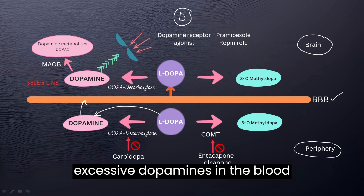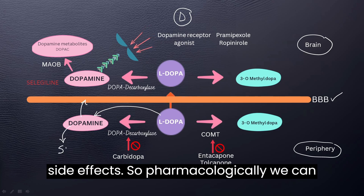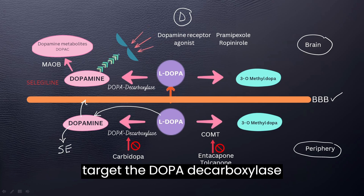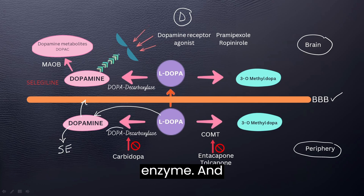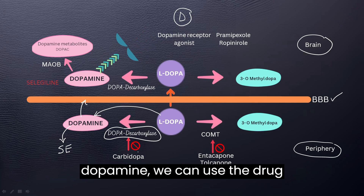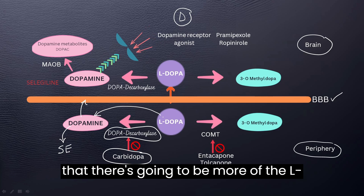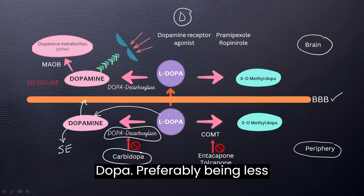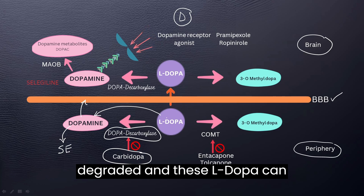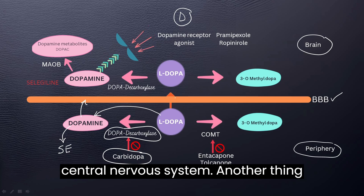The excessive dopamines in the blood peripherally can also lead to unwanted side effects. So pharmacologically, we can target the dopa decarboxylase enzyme and prevent the metabolism of L-dopa into dopamine. We can use the drug carbidopa so that there is going to be more L-dopa peripherally being less degraded. These L-dopa molecules can then effectively and efficiently cross the blood-brain barrier and move into the central nervous system.